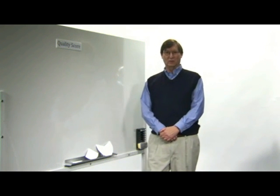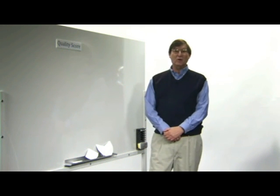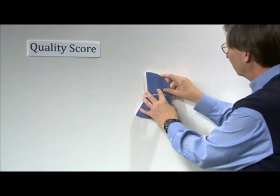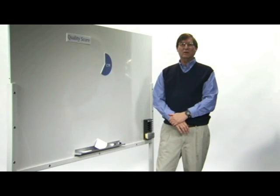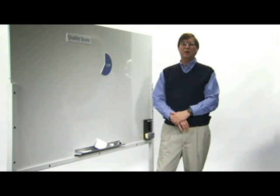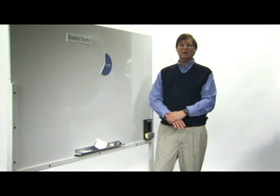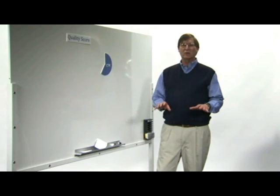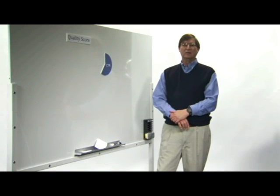So what is quality score? There are three components of the quality score, and the biggest one by far is click-through rate. By allowing users to vote with their clicks, millions of people are helping us decide which ads are best for each search query. Google's philosophy has always relied on user feedback as a key driver of decision-making, so using click-through rate and quality scores is our way of incorporating that feedback into ad serving.